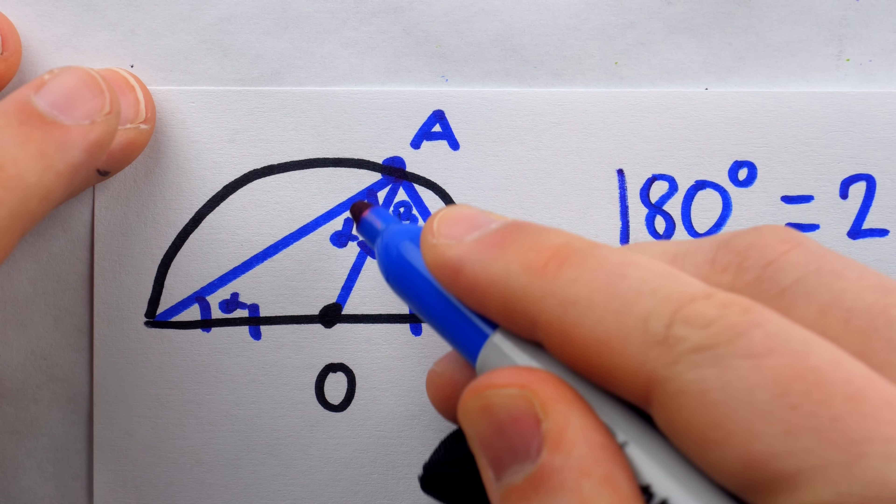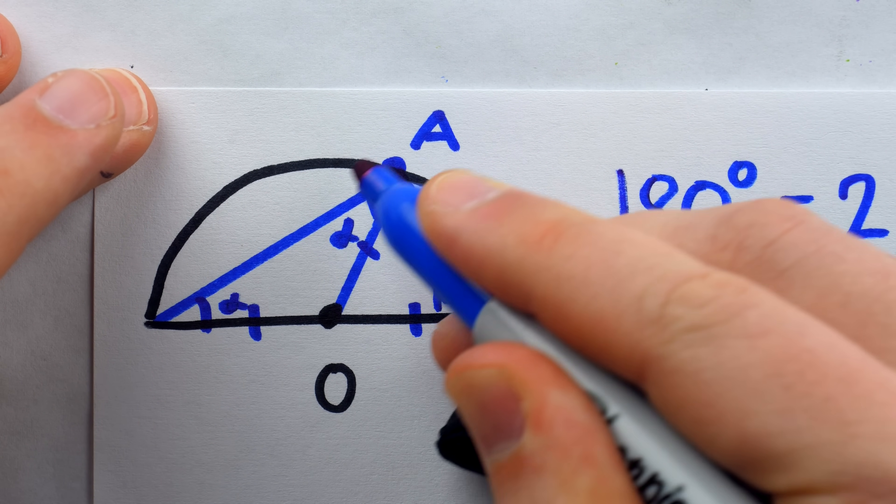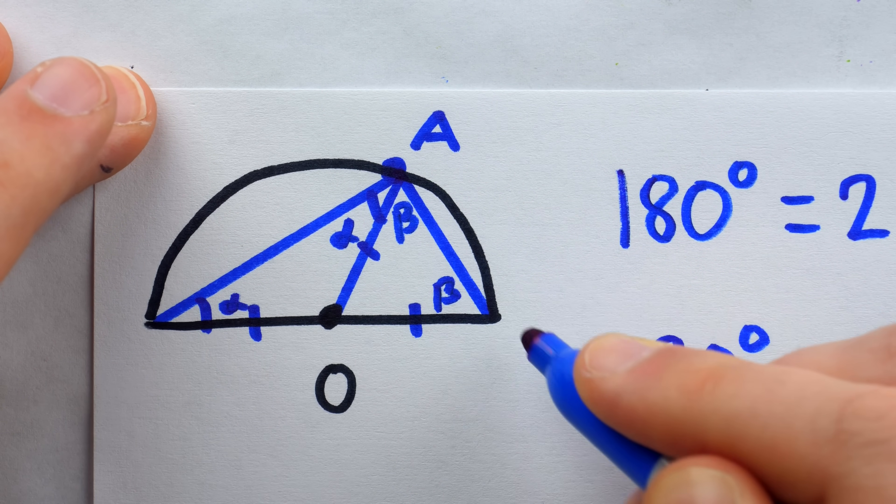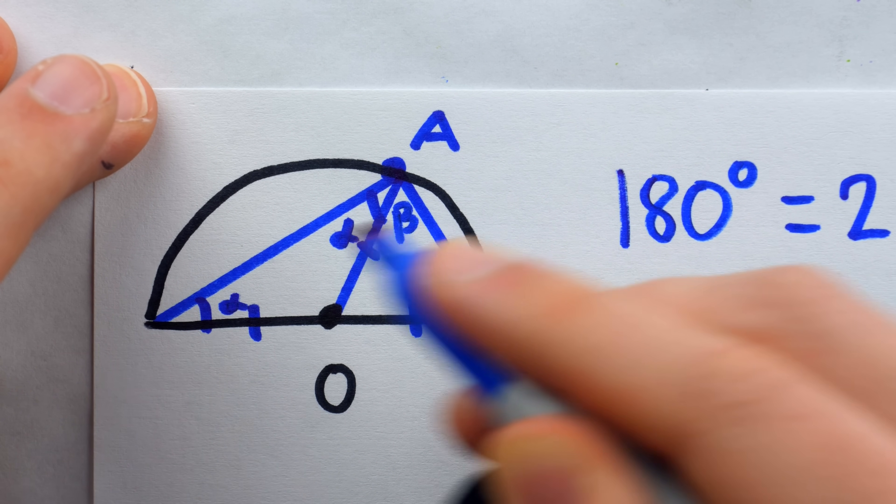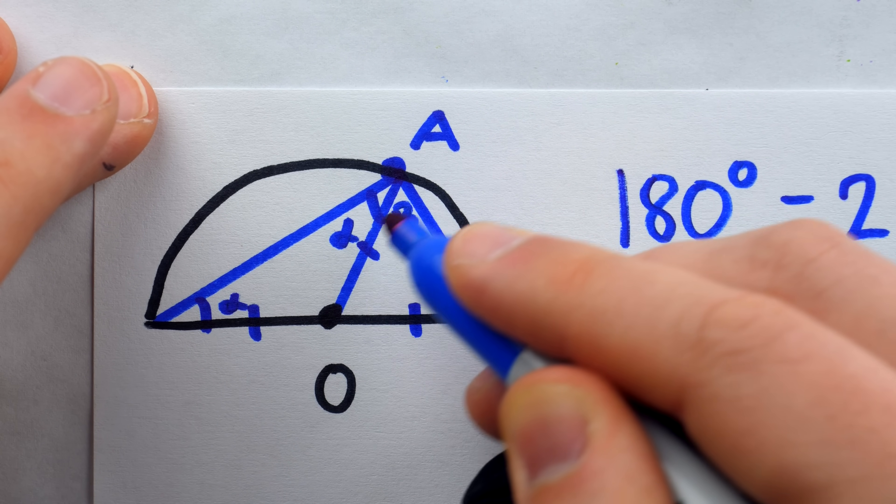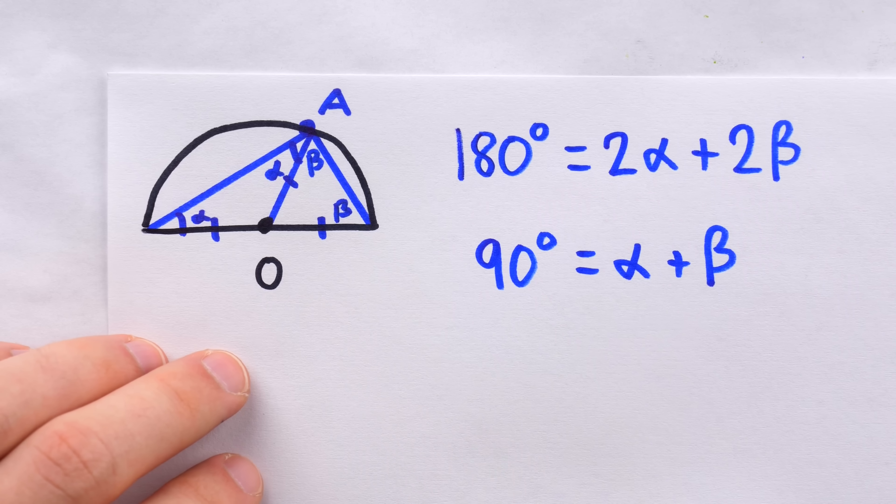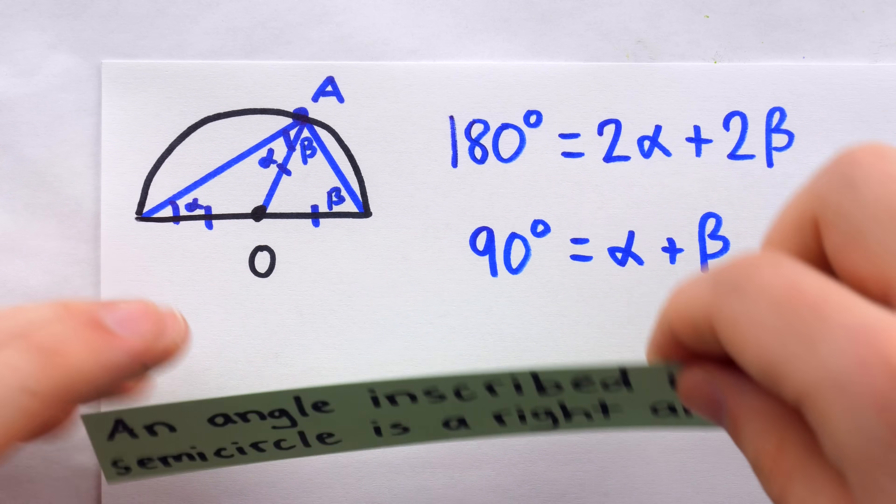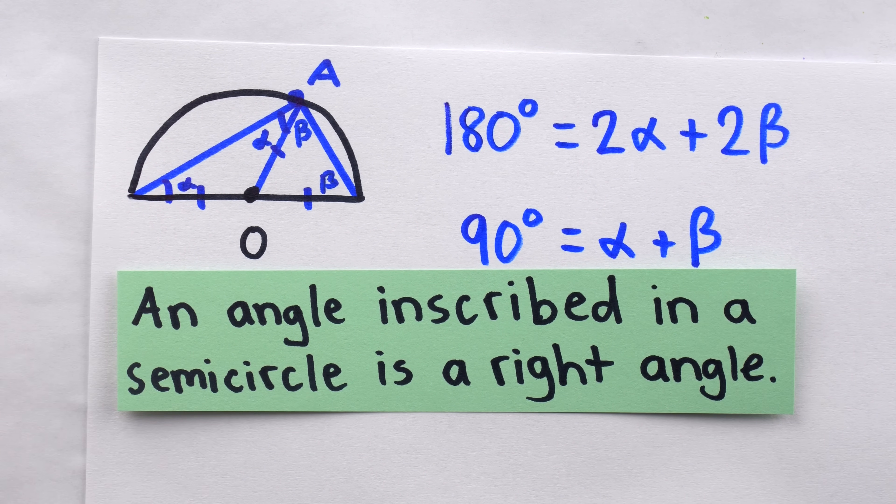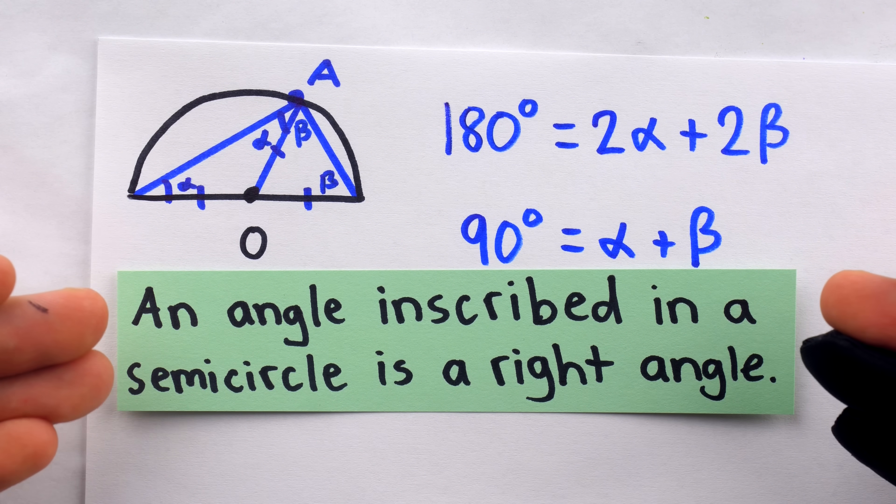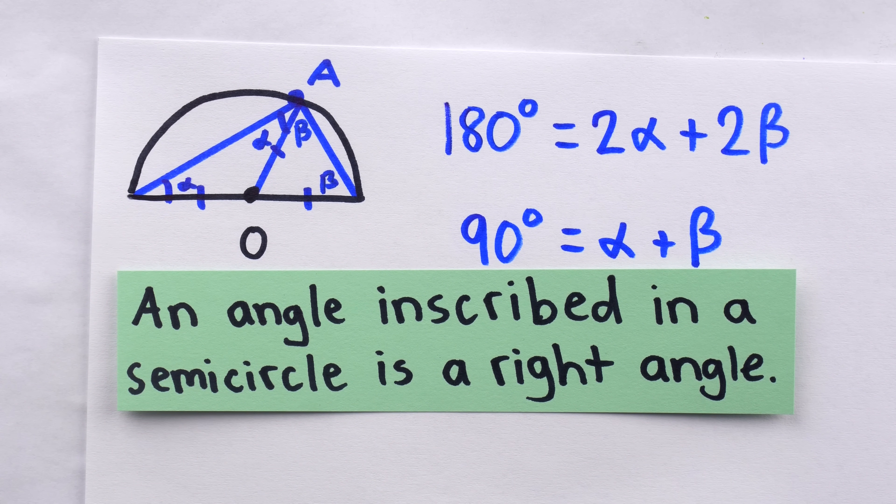What is α + β? Well it happens to be the angle measure of that inscribed angle. The inscribed angle has a measure of α + β. We've just shown that's 90 degrees. It is a right angle. Thus, as was to be demonstrated, an angle inscribed in a semicircle is a right angle, and that's possibly how Thales proved it.